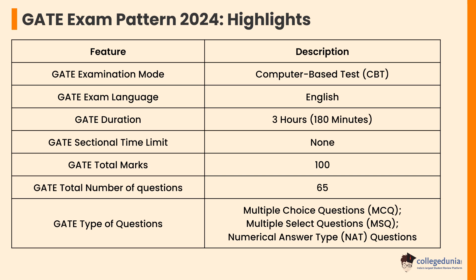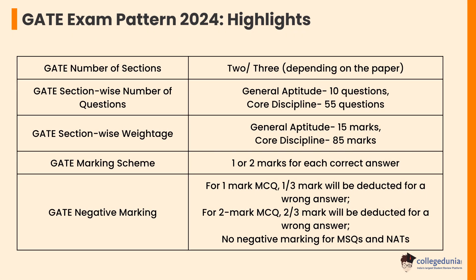The GATE question paper includes 65 questions with total marks of 100, mainly divided into the General Aptitude section and core discipline. The paper consists of Multiple Choice Questions, Multiple Select Questions, and Numerical Answer Type Questions. It consists of two or three sections depending on the paper. There will be 10 questions from General Aptitude and 55 questions from core discipline.